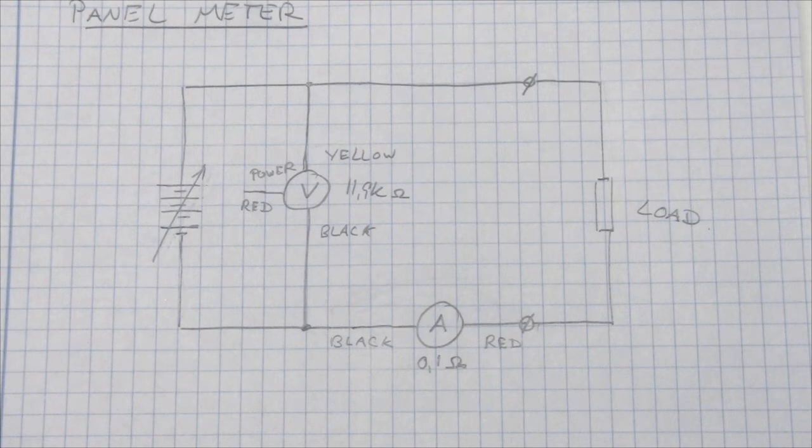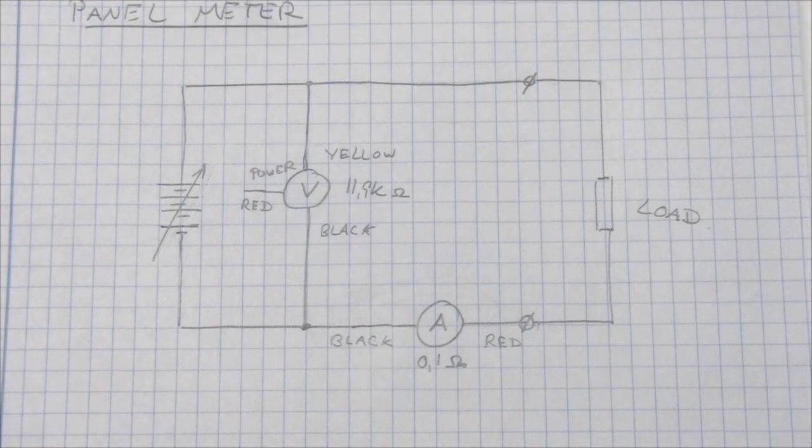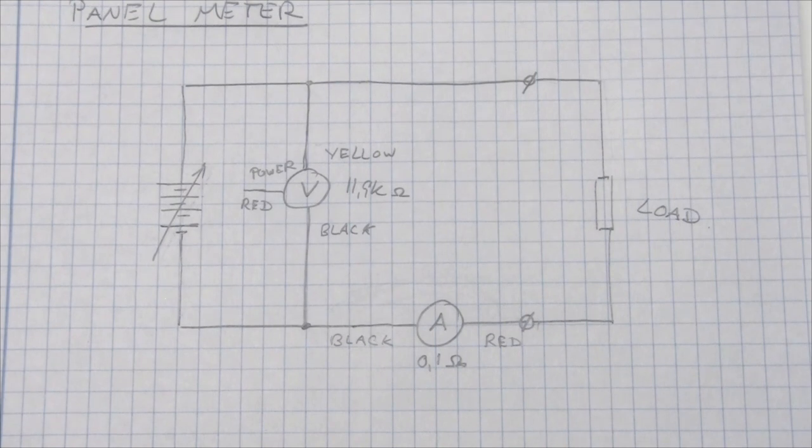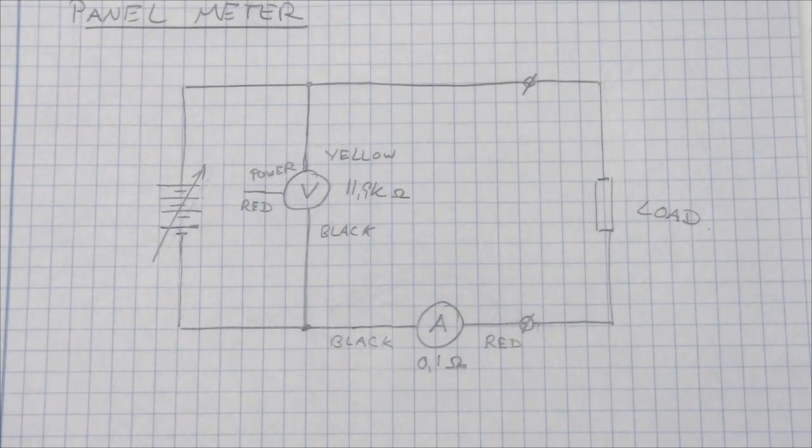Because this panel meter uses the same power supply for both the amp meter and the volt meter, we have no choice but to wire it up as a configuration one. If you need to wire something as a configuration two, either buy two volt and amp meters or buy a panel meter where the amp input and the voltage inputs are isolated from each other. But for a cheap little panel meter like the one I bought on eBay here for 3 bucks, this is not possible. So beware of that when you buy it.